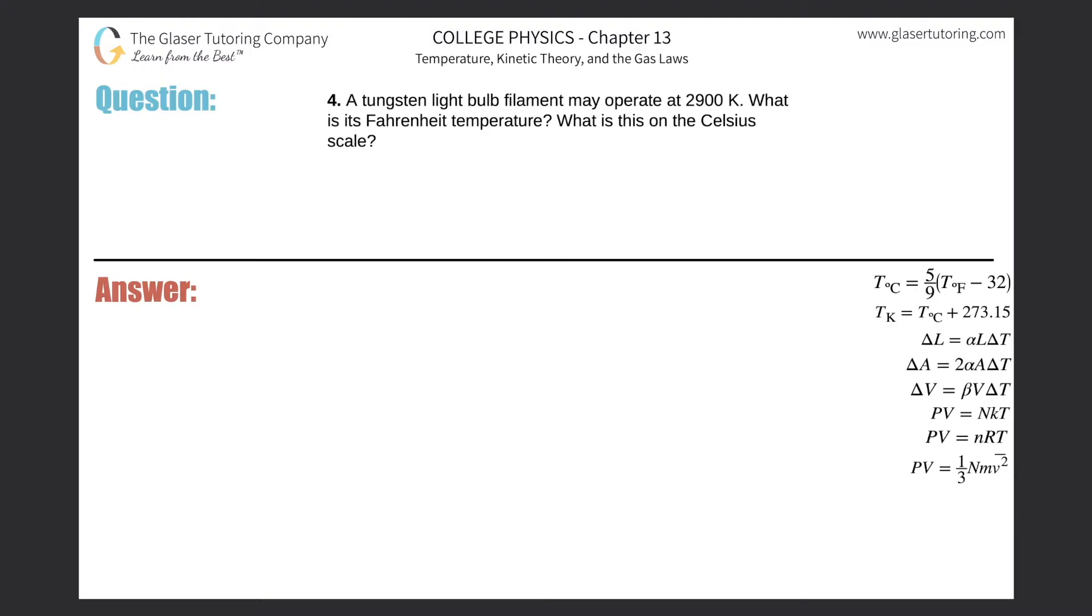Number four: A tungsten light bulb filament may operate at 2900 Kelvin. What is its Fahrenheit temperature and what is this on the Celsius scale? So we have to figure out two things—we have to figure out both Fahrenheit temperature and Celsius temperature, and we are given Kelvin temperature.